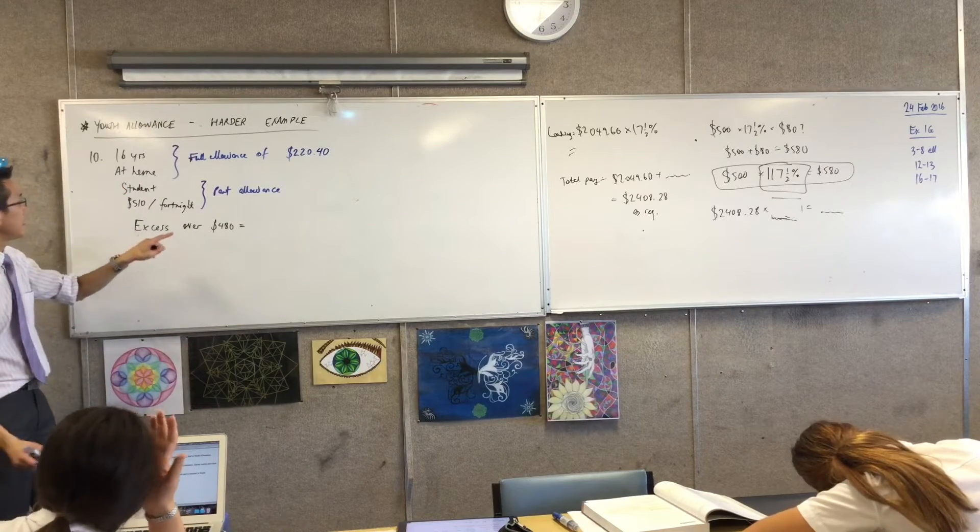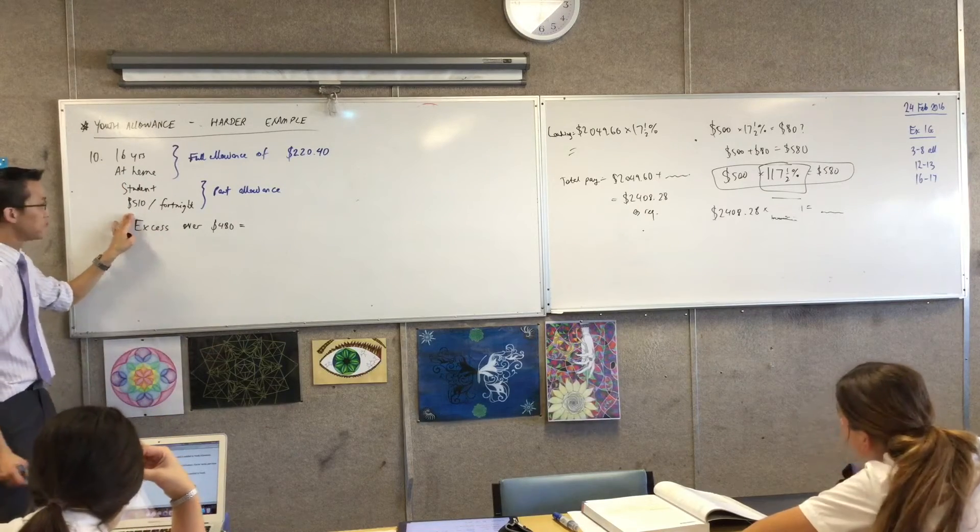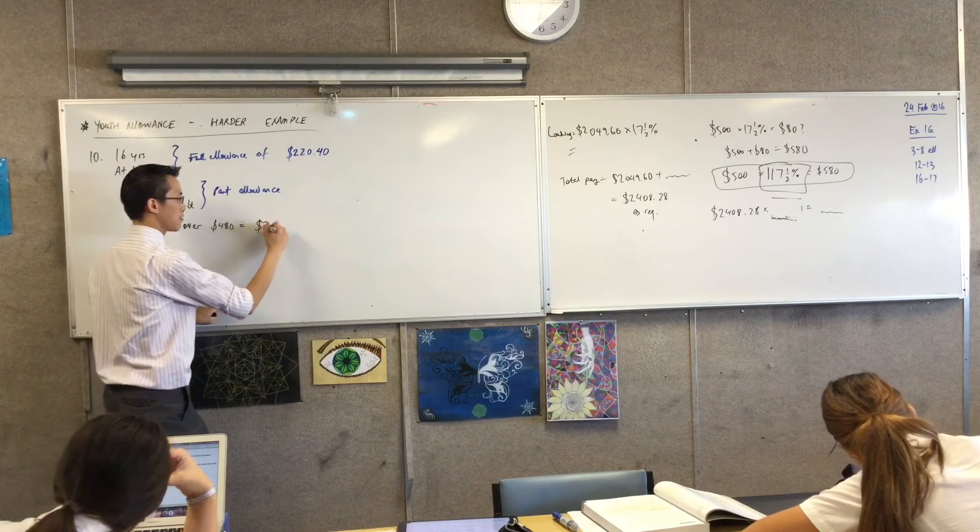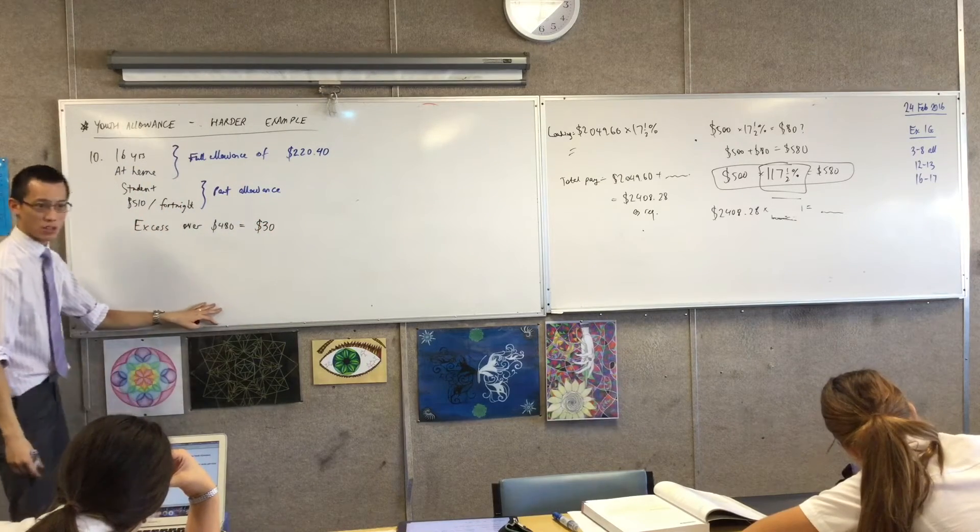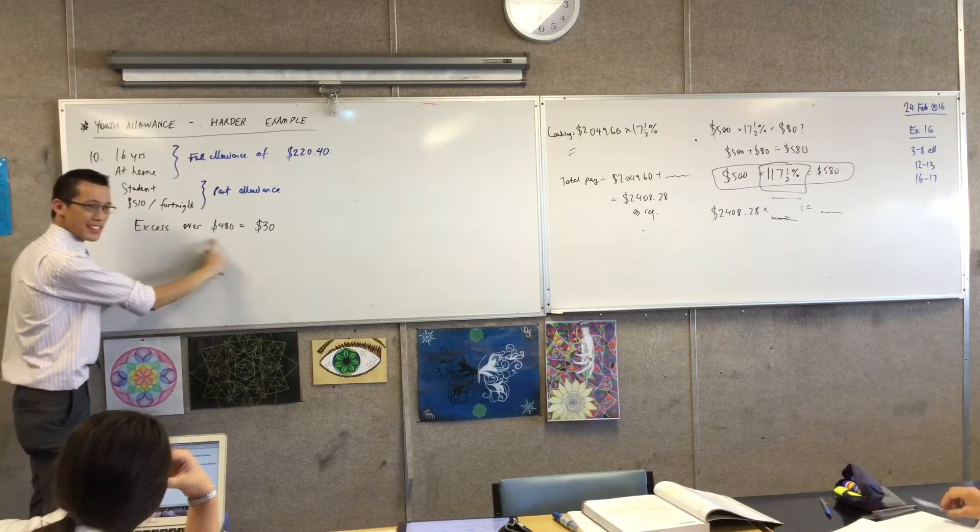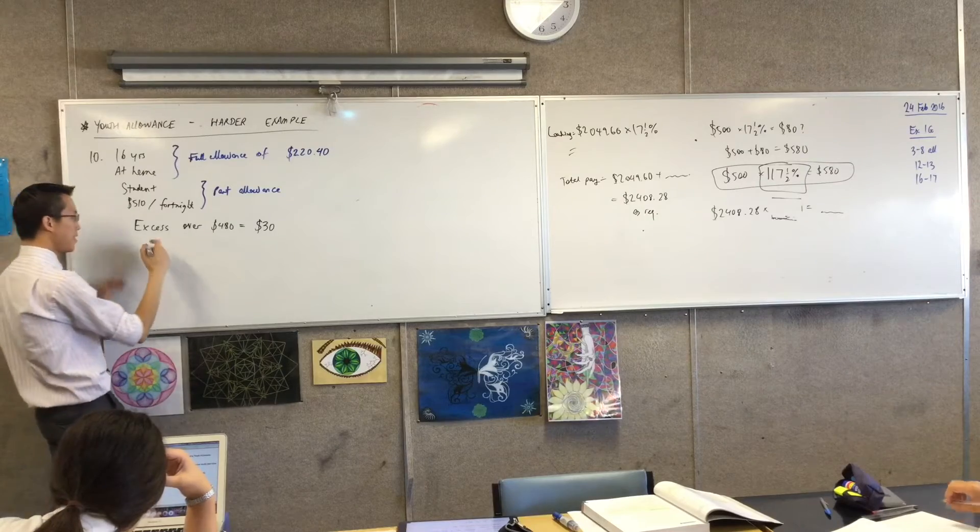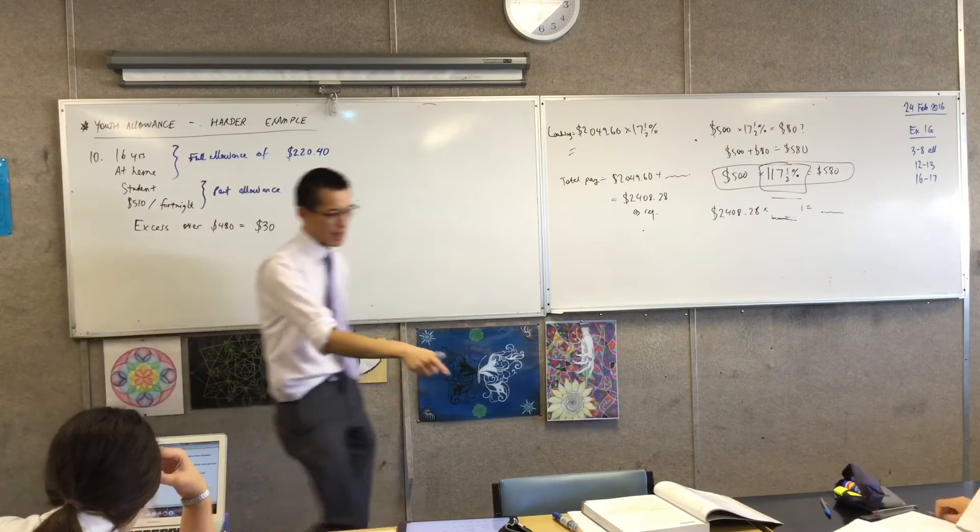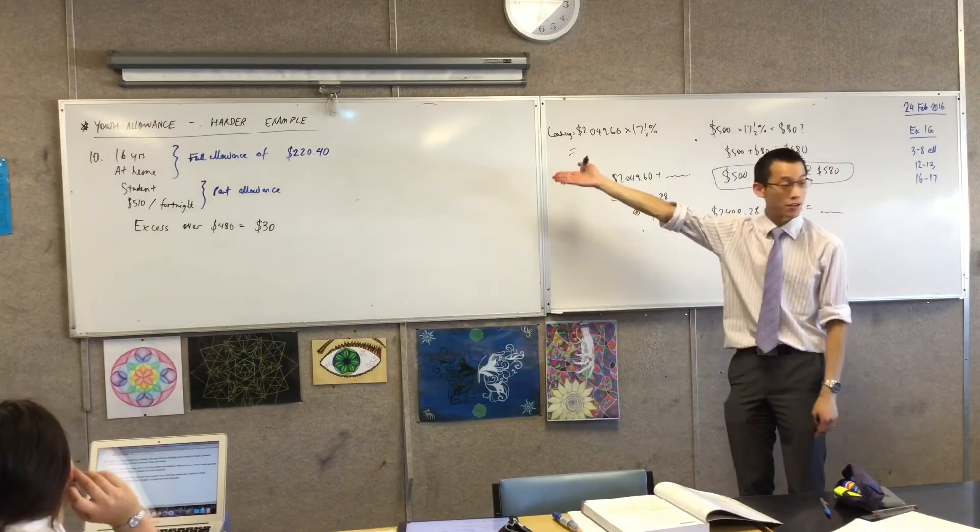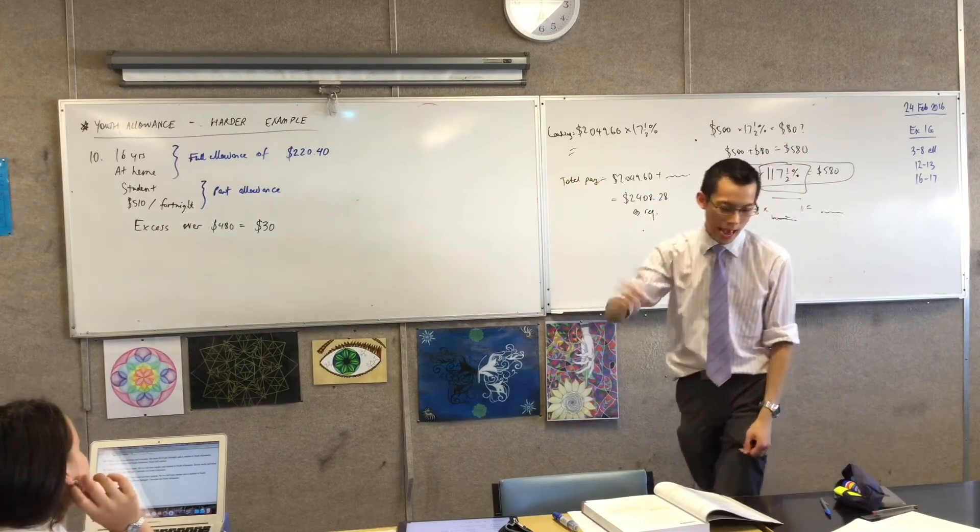So the excess over 480 is 510 take away 480. So that looks to me like it's $30. Are you okay with that? You see where I got that from? It's the amount over that. It's the difference there. So if that's the excess over 480, there's a reduction that applies to that. Have a look. It's that second sentence there. It starts with for income over 480, which is this. How many cents in the dollar? 60 cents.